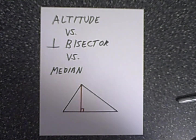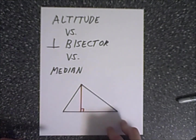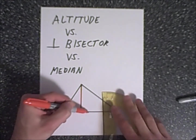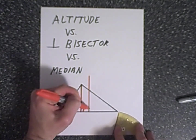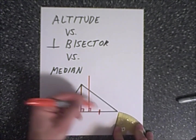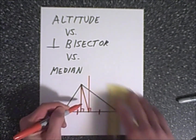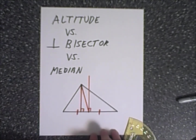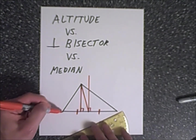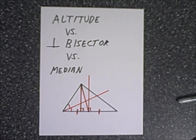A quick summary: the altitude starts at the vertex and draws a perpendicular line to the opposite side. The perpendicular bisector starts at the midpoint of the side and draws a perpendicular line straight up — these are parallel but not the same. The perpendicular bisector creates two congruent segments and shares its endpoint with the median, which goes from the vertex to the midpoint of the opposite side. Lastly, the angle bisector takes any vertex and bisects the angle. Visit the Math Plan site for exercises and additional resources.